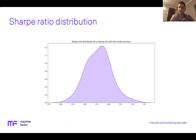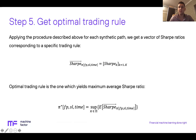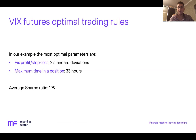By applying this procedure across all synthetic paths, we get a vector of Sharpe ratios for each trading rule, and we define the optimal training rule as the one with the maximum average Sharpe ratio across all synthetic paths. Applying this algorithm to our VIX futures example, the optimal fixed profit and stop loss level is two standard deviations, with a maximum time in position of 33 hours, yielding an average Sharpe ratio of 1.79.